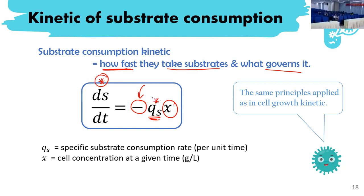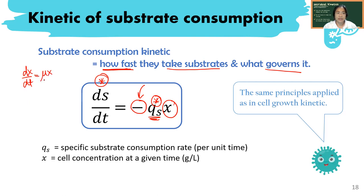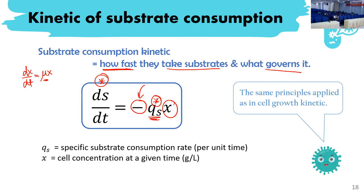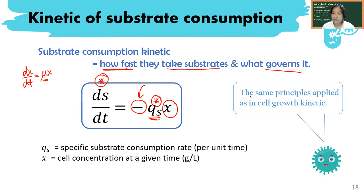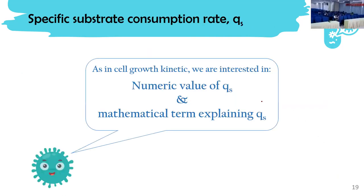The qs term is similar to what μ is. In cell growth we have dx/dt = μx, and qs and μ play a similar role. We call this small qs the specific substrate consumption rate, analogous to the specific growth rate. It also multiplies by the cell concentration. Everything has the same principles applied in cell growth kinetics, including all the calculations.